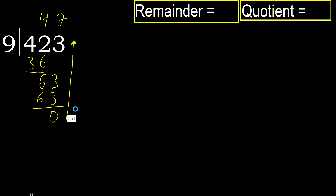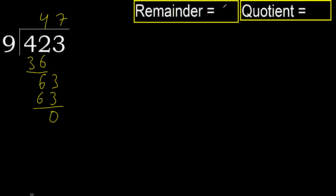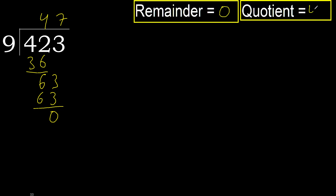There is no next digit, therefore we finish. 423 divided by 9 is 47.